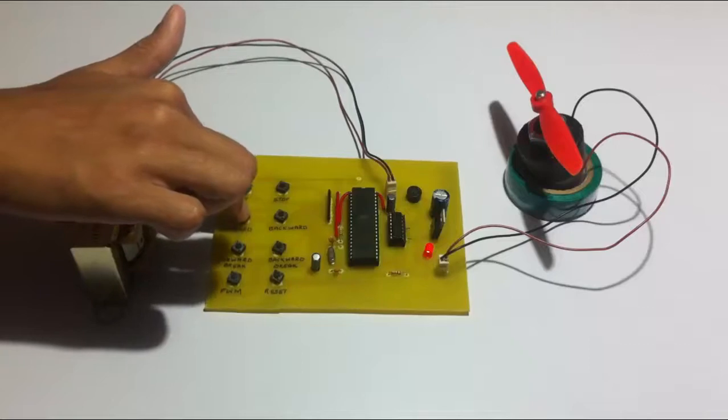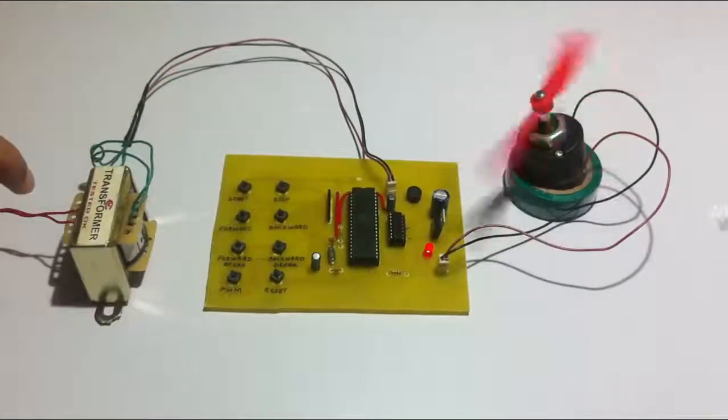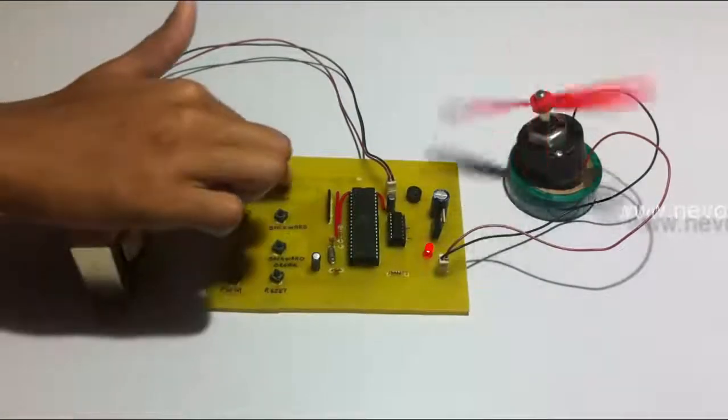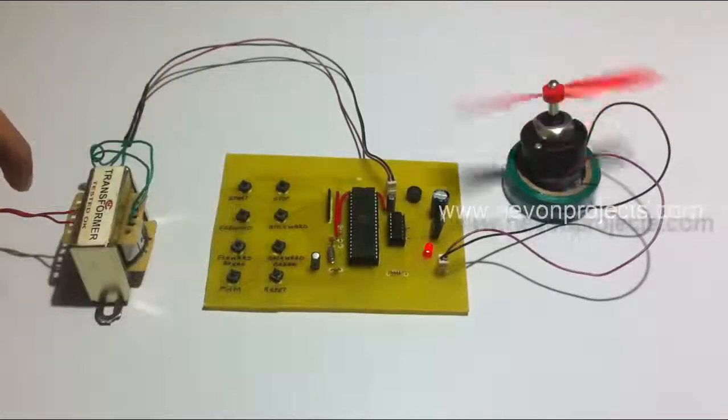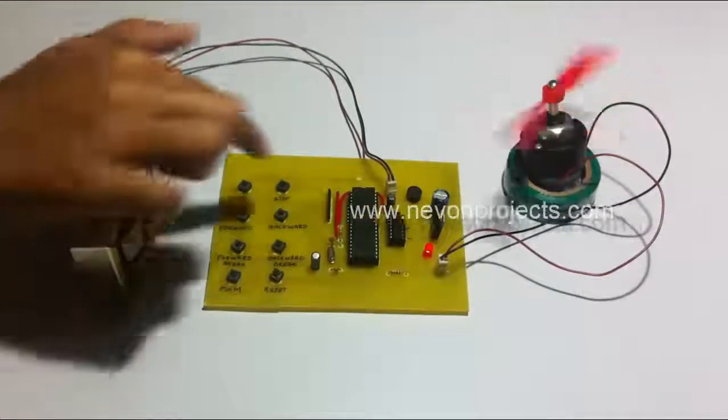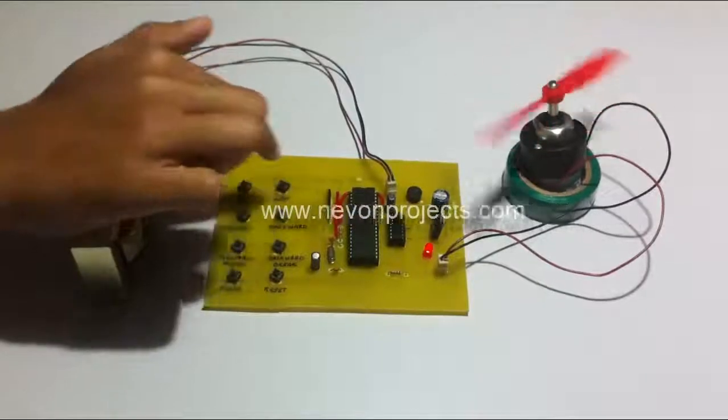We also have forward and backward. So let's run the motor in forward direction. This was the forward, similarly backward. When we press stop, as you can see, the motor stops smoothly.